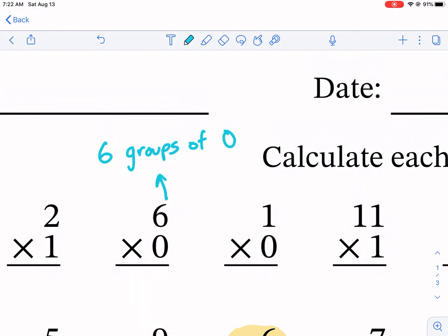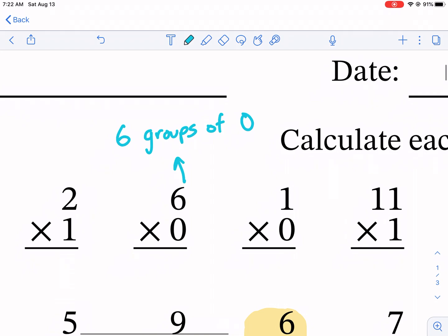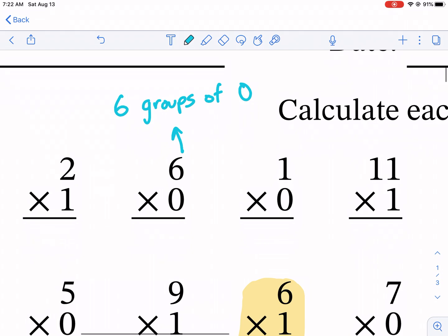Now the trick is if we're multiplying by zero, we want groups of zero. For example, if we're talking about groups of people or groups of students, if you have zero in a group, that means there's no people. And if you have six groups of no people, that's still no people.